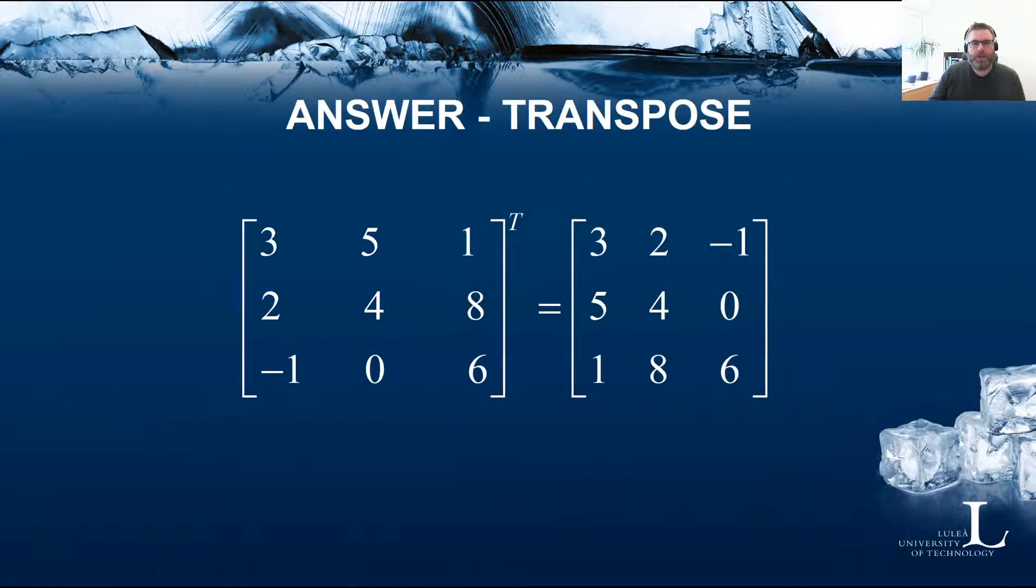Let's see the answer for the transpose of a matrix. It means that the rows will become columns in the transpose matrix and vice versa. In this case, the first row 3, 5, 1 becomes the first column in the transpose matrix 3, 5, 1. Or 3, 2, minus 1, which is the first column of the original matrix, becomes the first row of the transpose matrix. So that's not that difficult to remember.